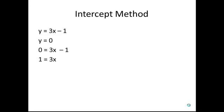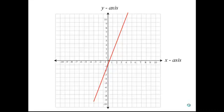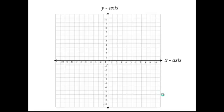At the moment, the x is being multiplied by 3. To undo this, we need to divide both sides by 3. This gives us 1 third equals x or x equals 1 third. We can then plot this point onto the graph and connect these two points with a line.